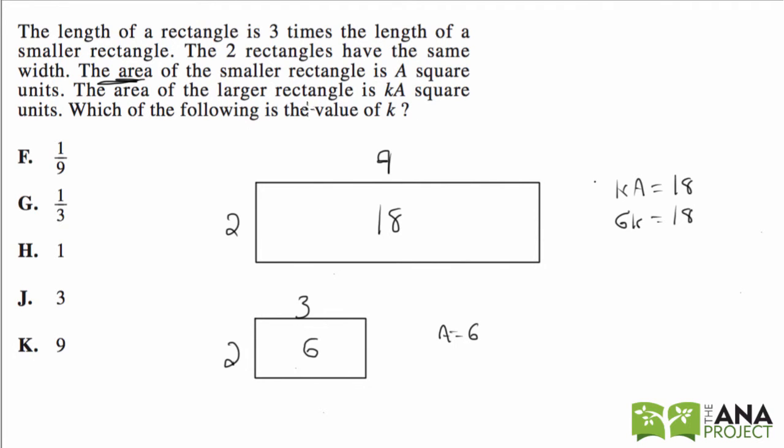Which of the following is the value of k? Well, if 6k is 18, if we divide both sides by 6, 18 divided by 6, k equals 3. So the correct answer is J.